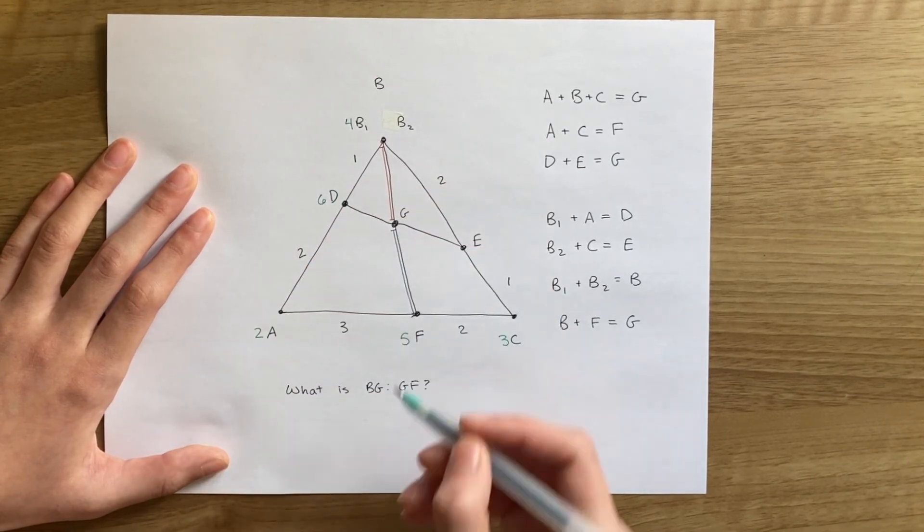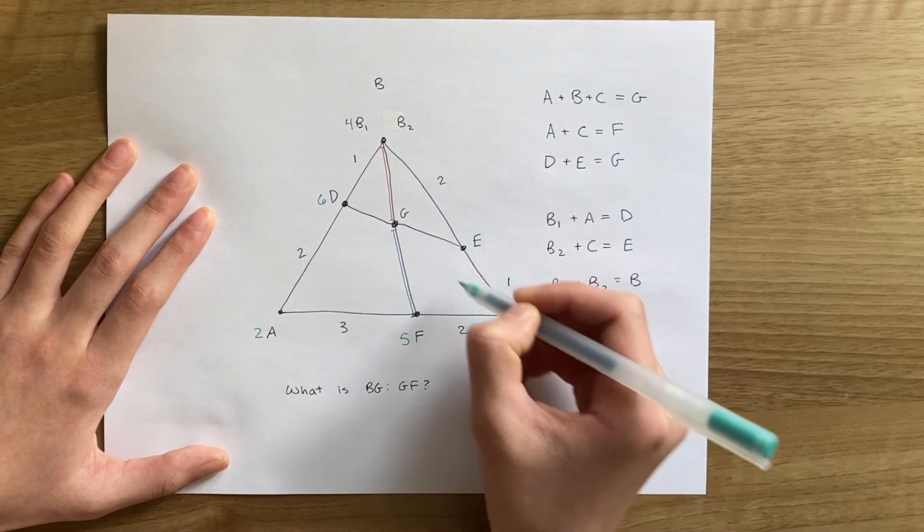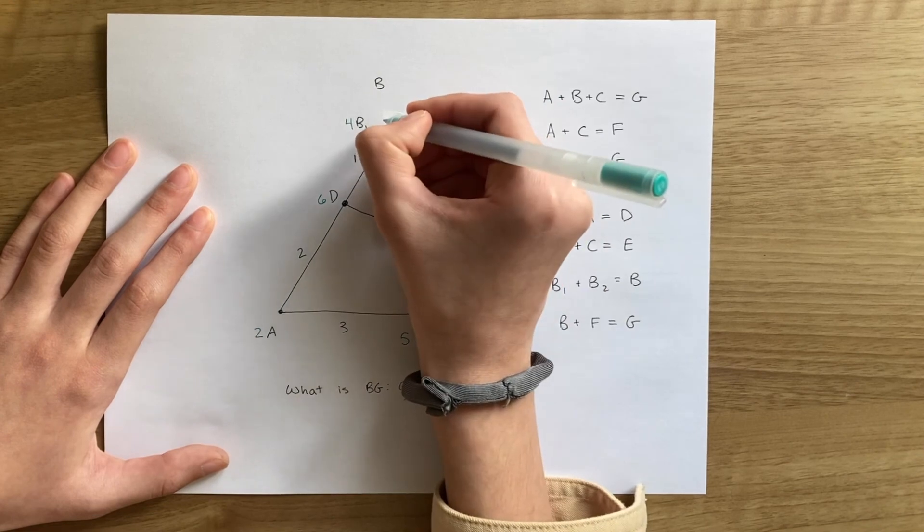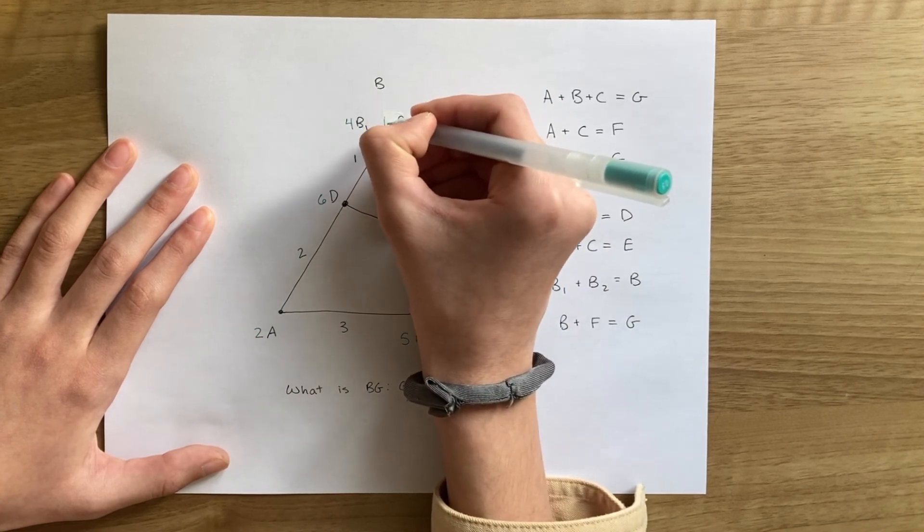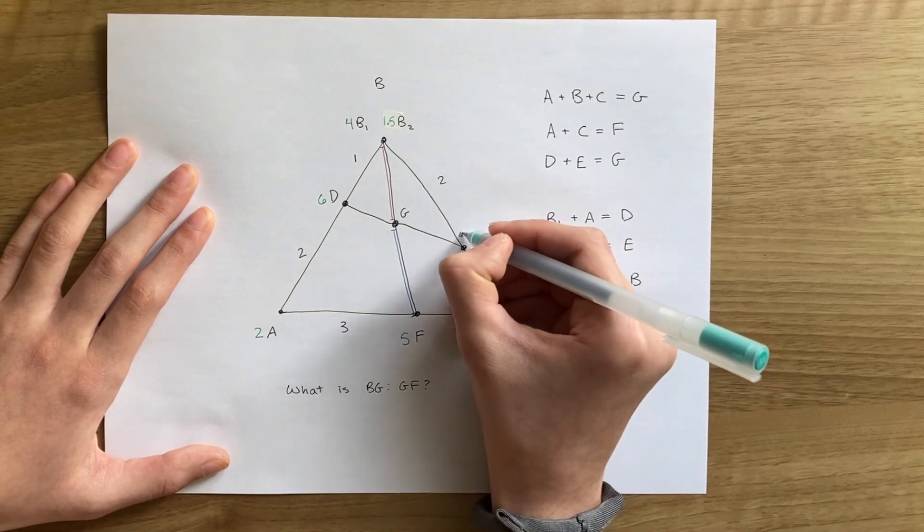Similarly, on the other side, since E is the center of mass of B2 and C, and we have that 2 to 1 ratio, B2 must have half the mass of C. So it has a mass of 1.5, and E has a mass of 4.5.